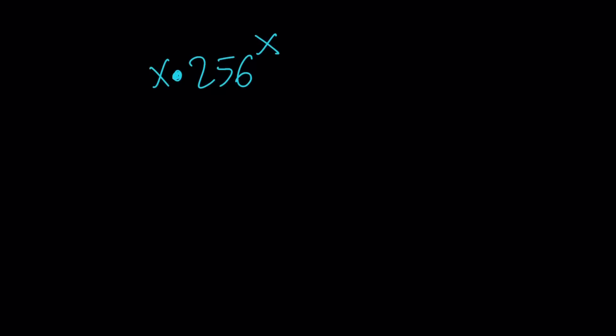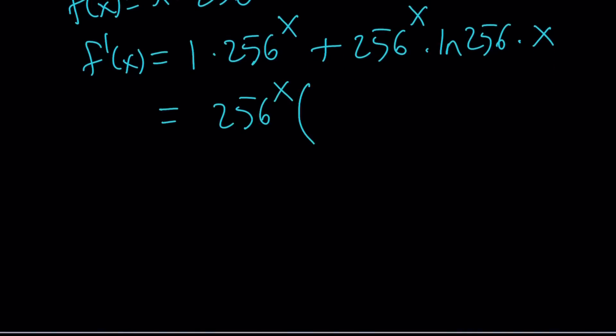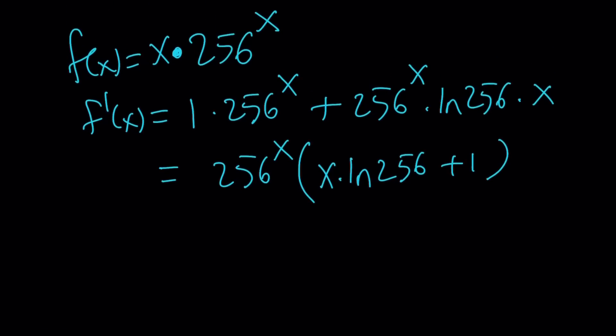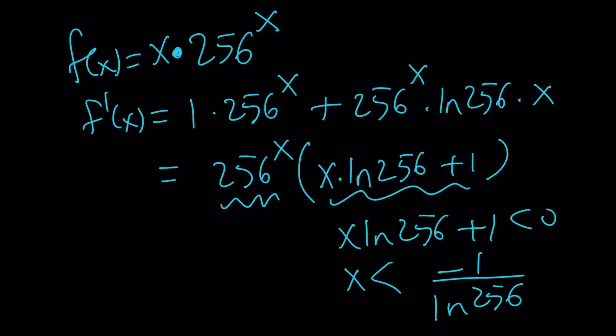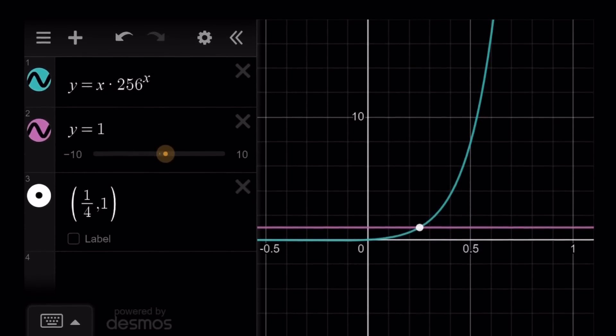Let's take a look at this function and differentiate it. It's the derivative of the first times the second plus the derivative of the second, which is 256 to the power x times ln 256 times the first. And if you take out 256 to the power x, you get x times ln 256 plus 1. So this function looks like it's increasing because it does have this exponential piece, but it also has a linear piece. Could this be decreasing? Can the derivative be negative? In order for this to be negative, x must be less than negative 1 over ln 256. And that's a very small negative number.